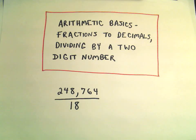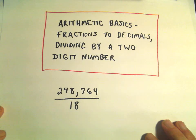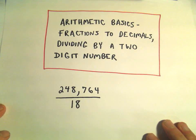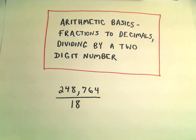Alright, by popular request here, we'll do another arithmetic basics example. What we're going to do is convert a fraction to a decimal, but this time we're simply going to divide by a two-digit number. The idea is exactly the same as when we divide by a single-digit number, but obviously the arithmetic gets a bit more tedious in this case.